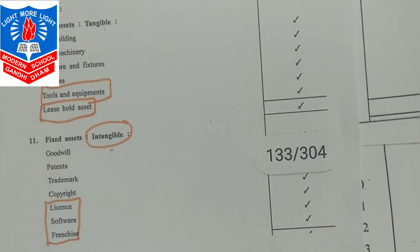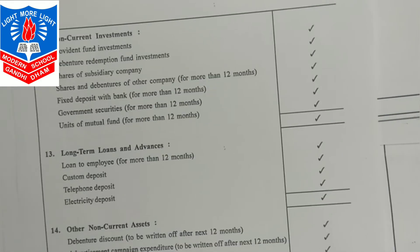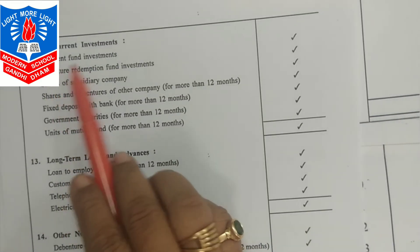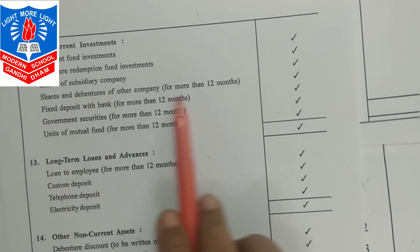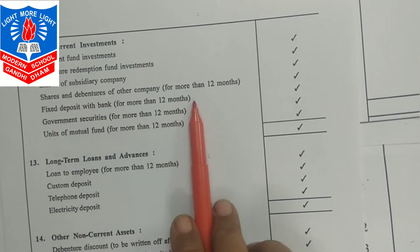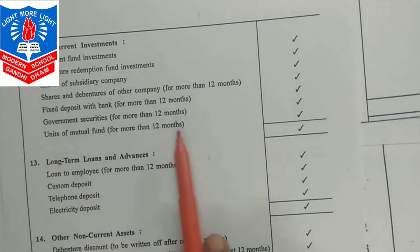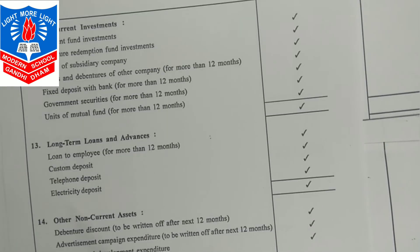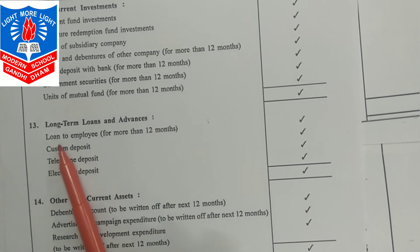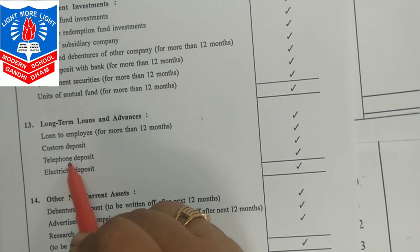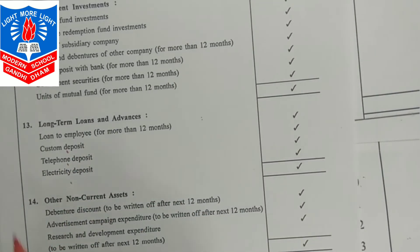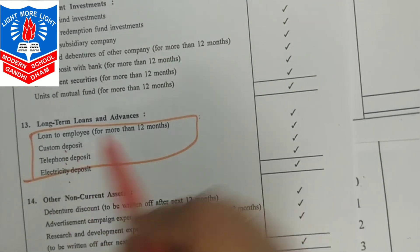After fixed assets, the next point is non-current investments, which include provident fund investment, debenture redemption fund investment, shares of subsidiary companies, shares and debentures of other companies with maturity more than 12 months, FDs more than 12 months, government securities more than 12 months, and units of mutual funds with maturity more than 12 months. Long-term loans and advances include loans to employees, telephone deposits, custom deposits, and electricity deposits.